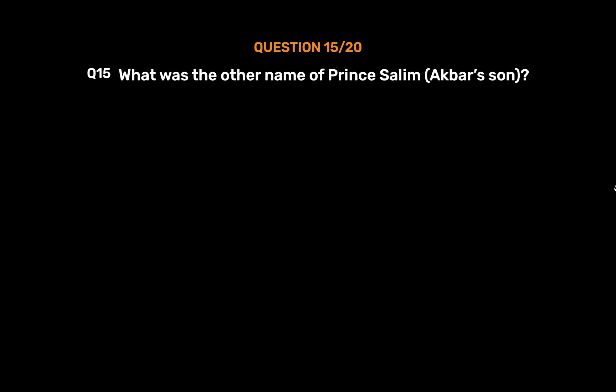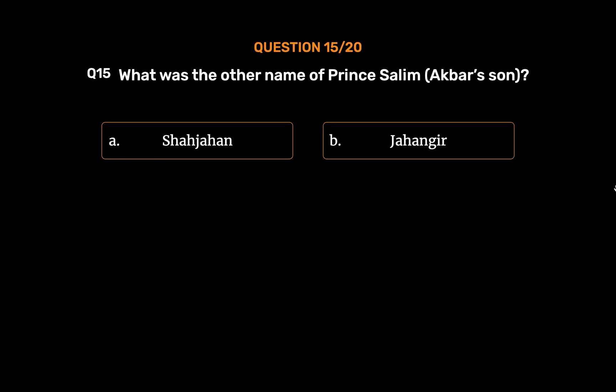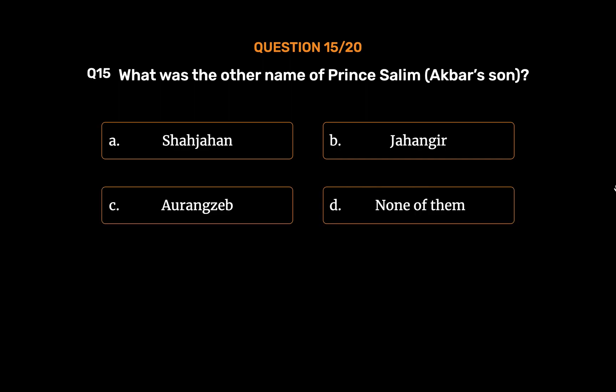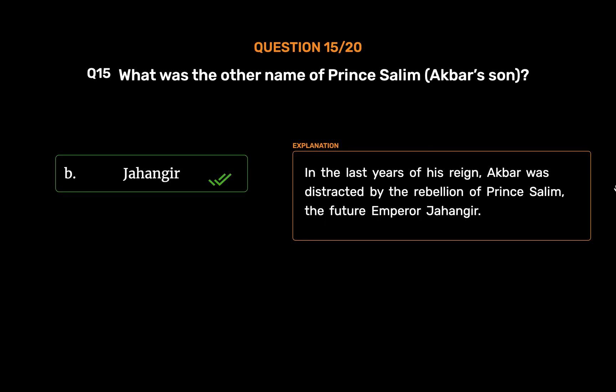Question 15: What was the other name of Prince Salim, Akbar's son? Option A: Shah Jahan. Option B: Jahangir. Option C: Aurangzeb. Option D: None of them. The correct answer is Option B, Jahangir. In the last years of his reign, Akbar was distracted by the rebellion of Prince Salim, the future Emperor Jahangir.